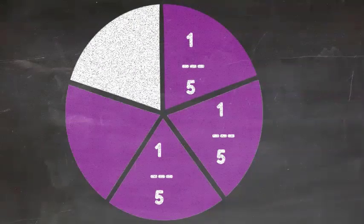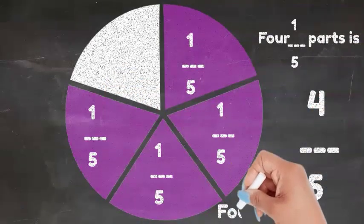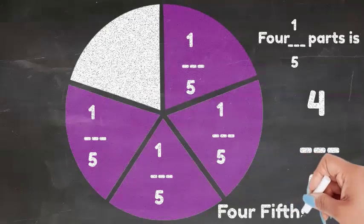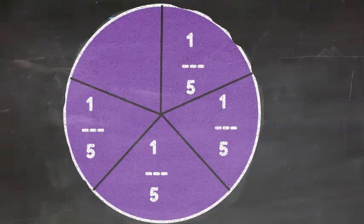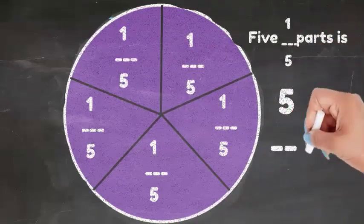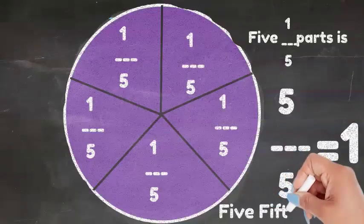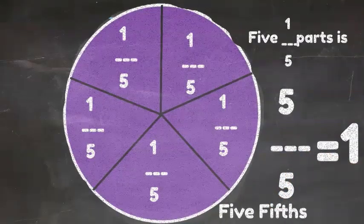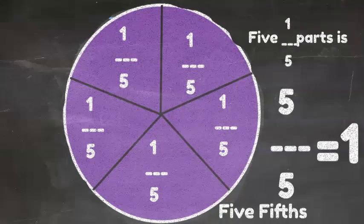Shade another portion. Now we have four one-fifths parts. Four-fifths written four as the numerator, five as your denominator, four-fifths shaded. Shade the last portion. What would you have? Another one-fifth shaded. That's a total of five-fifths shaded, which is also the same as the whole entire shape shaded. Five-fifths is written five over five, which is five as the numerator and five as the denominator.